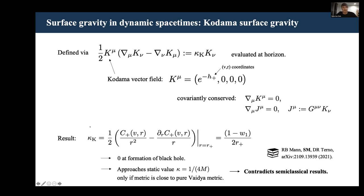Once again, if you evaluate the surface gravity that you obtained from this definition, then you'll find that at the formation of a black hole, for the k=1 solution, it's zero.